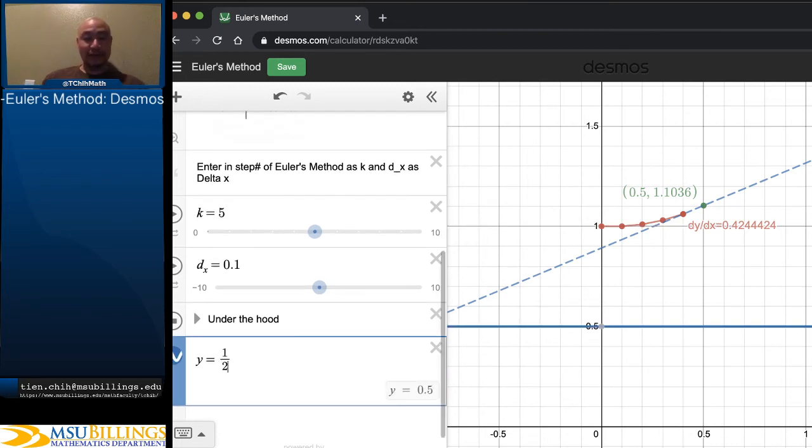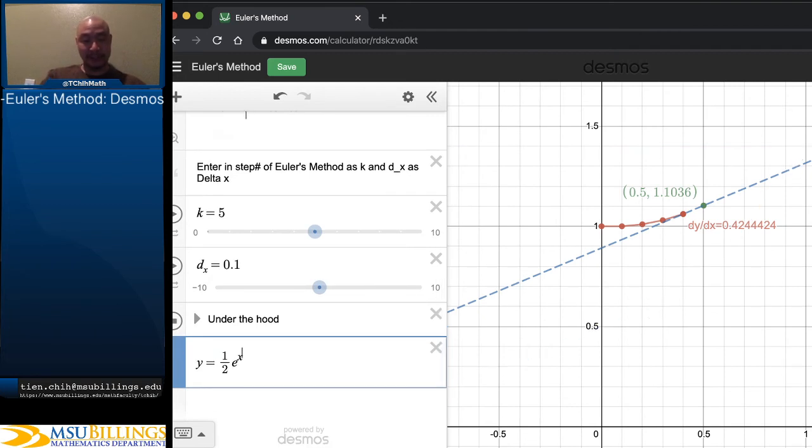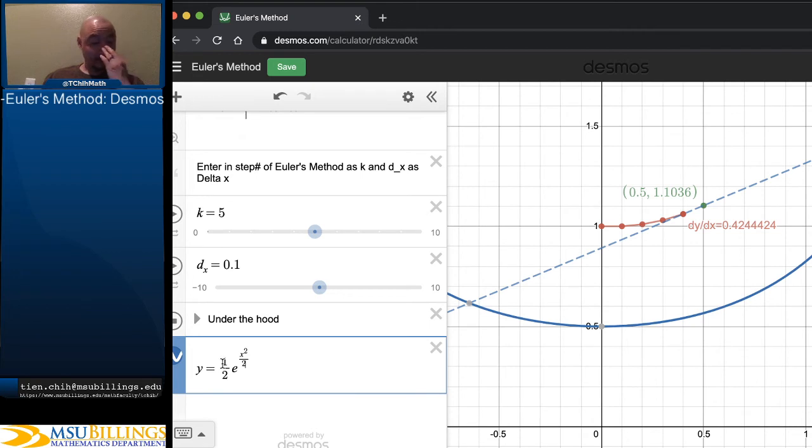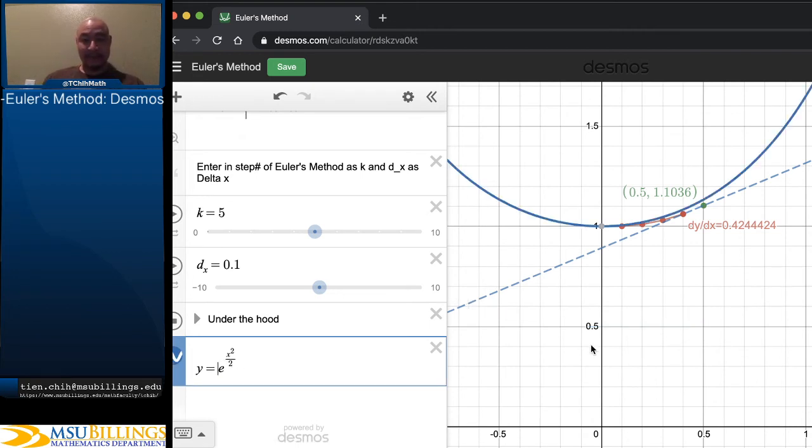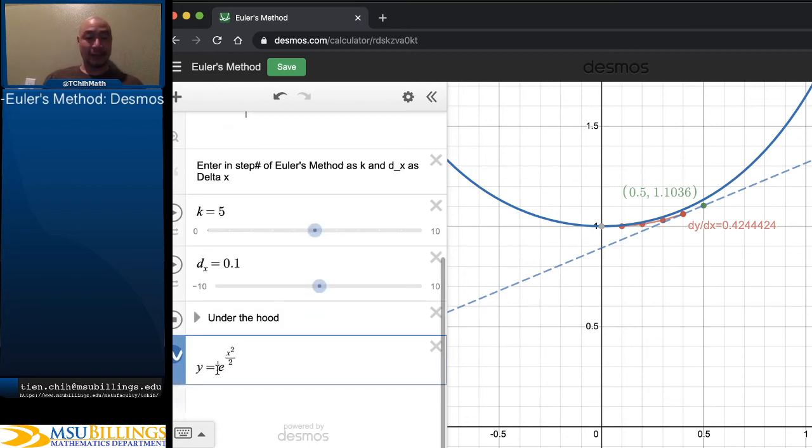And solving a separable differential equation is beyond the scope of this current video, but the solution to this particular differential equation with this initial condition of when x is 0, y is 1, is y equals e to the x squared over 2. And if we plot that, we see there is some error accumulating there. But otherwise, it does more or less follow along the shape of that curve.